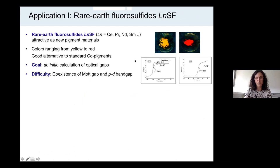Now I want to jump into the first application, which is an investigation of the rare earth fluorosulfides, LNSF, where LN is a rare earth element like cerium, praseodymium, neodymium, or samarium. These materials are interesting as new pigment materials because they show very brilliant colors.